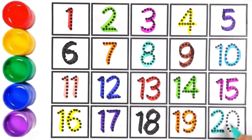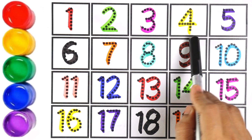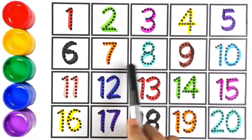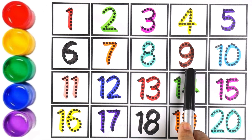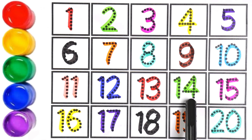Two and zero makes the number twenty. Now let's count from one to twenty: one, two, three, four, five, six, seven, eight, nine, ten, eleven, twelve, thirteen, fourteen, fifteen, sixteen, seventeen, eighteen, nineteen, twenty. Thank you so much for watching!